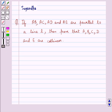Hello and welcome to the session. In this session we discuss the following question: If AB, AC, AD and AE are parallel to a line L, then prove that A, B, C, D and E are collinear.